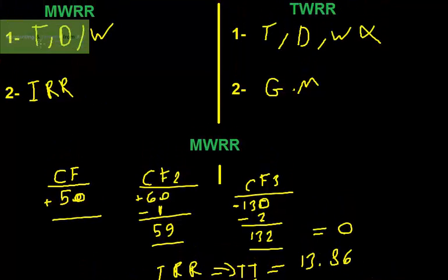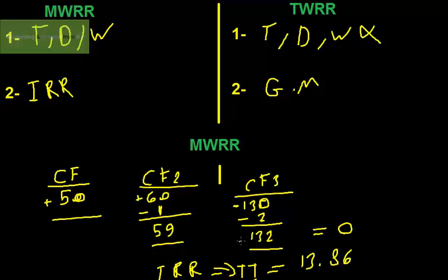Now we can understand how the timing of deposits (positive) and withdrawals (negative) affects the calculation of the money weighted rate of return, and how we use IRR to compute it. Now let's flip to the time weighted rate of return.